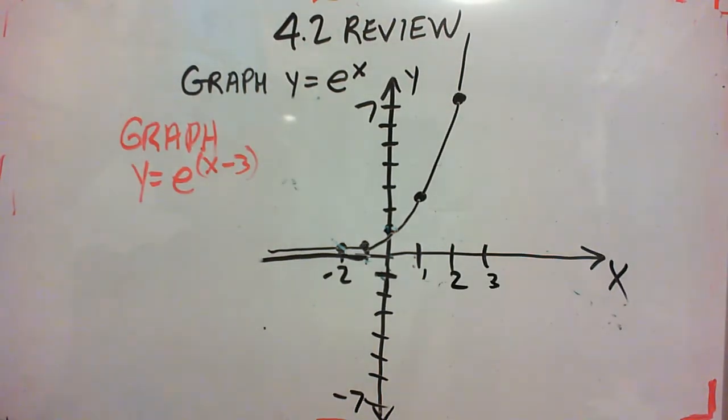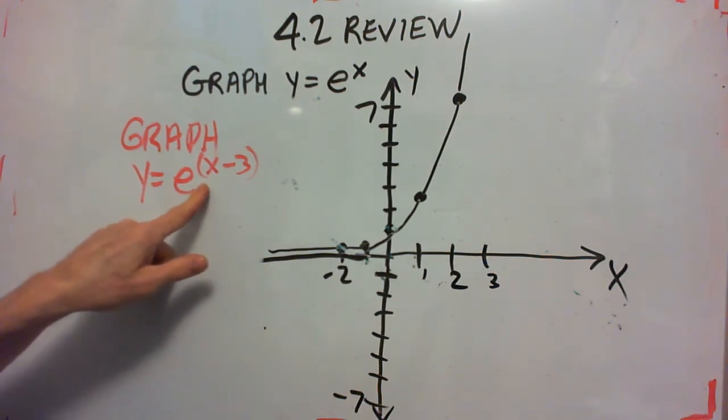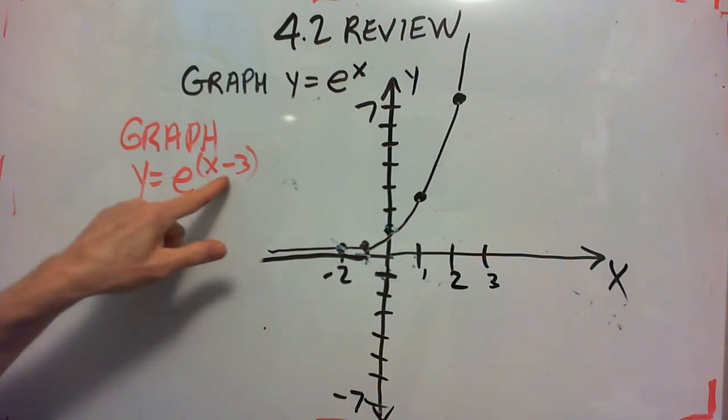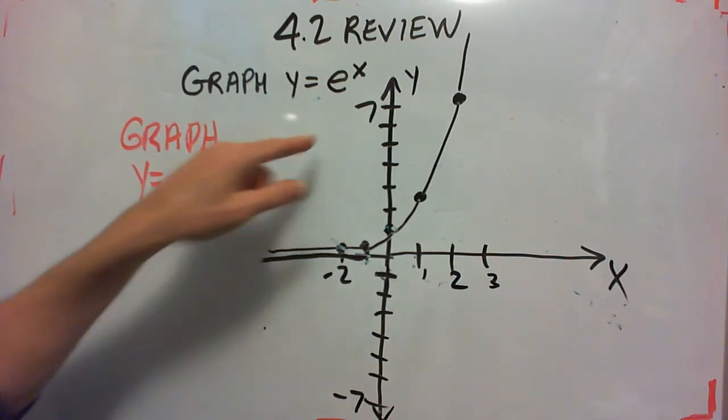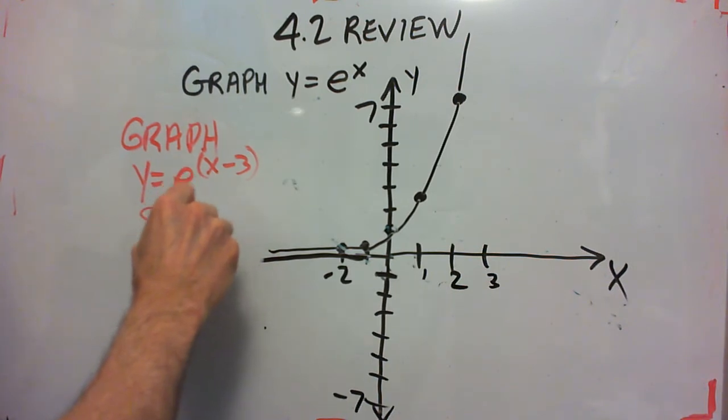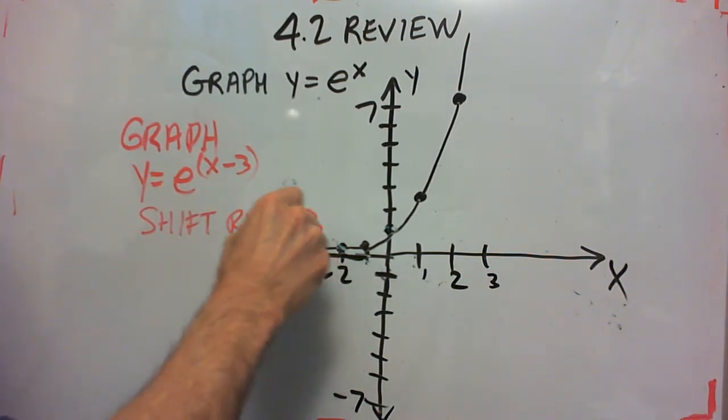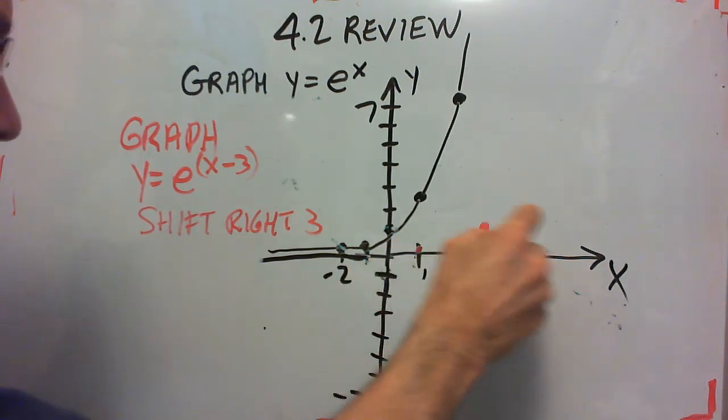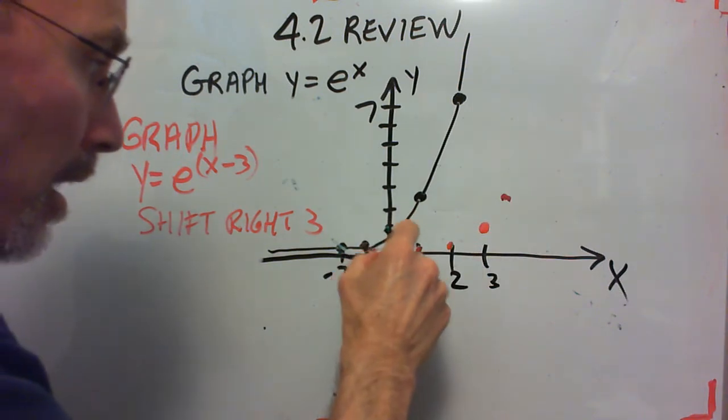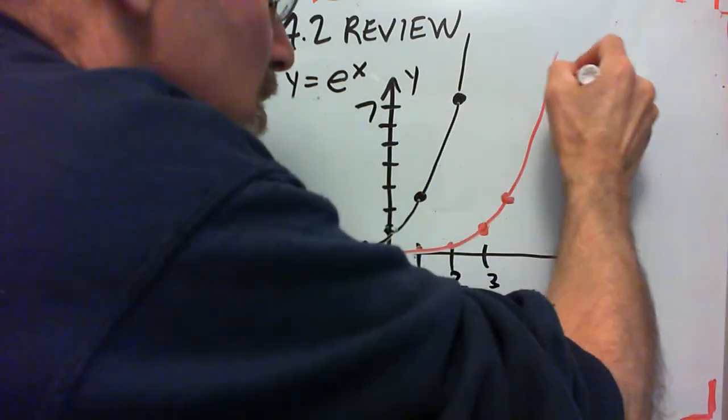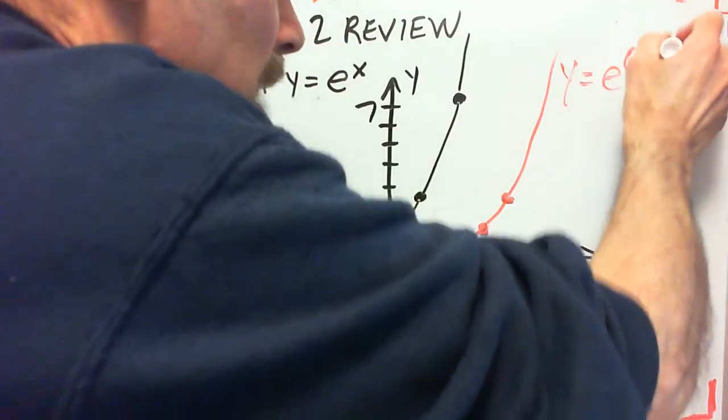Okay, the next function shift we're going to look at is graph e to the x minus 3. What would we do to the e to the x function? Well, all we've done here is we have replaced x with x minus 3. If you remember from 2.5, this shifts it right 3. So we take all those points and move them to the right 3. And our graph is looking like that. So this is y equals e to the x minus 3.